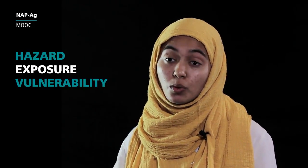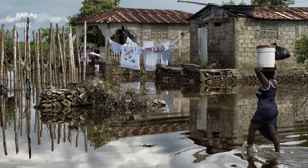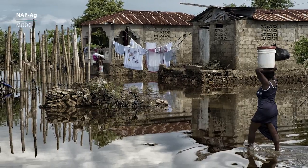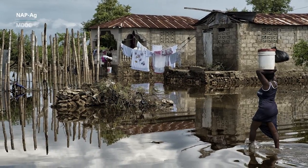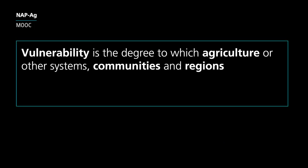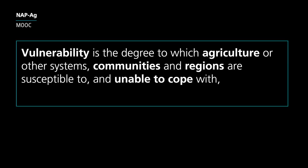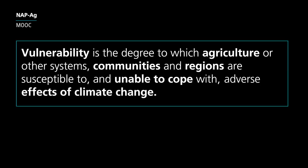Hazard is, say, a weather event — a snow blizzard or flood. Exposure is the system that is exposed to it or can be affected by it; in our discussion, the agriculture system. Vulnerability of the agriculture system is then determined by the degree to which agriculture is susceptible to, and unable to cope with, the adverse effects of climate change.